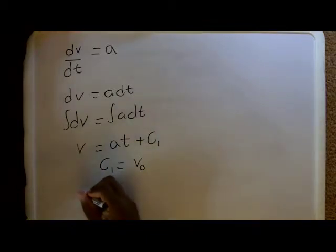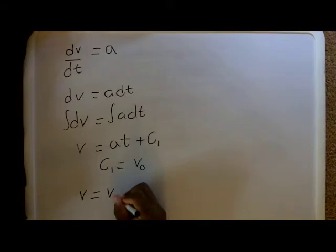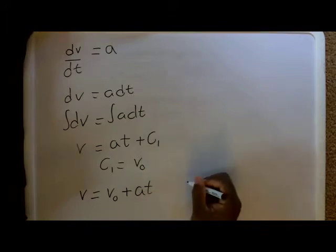So, the instantaneous velocity is equal to, if you just replace this, v is initial velocity plus acceleration times time: v = v0 + at.